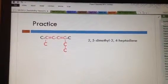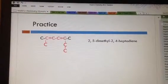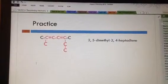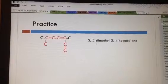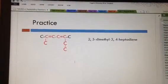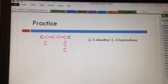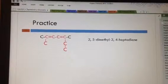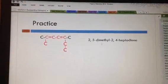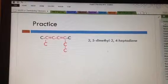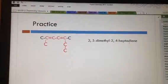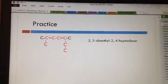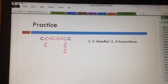So at 2 and at 5, there are single carbon charms. A single carbon charm is called methyl. Because there are two of them, it is a dimethyl. So the 2 and 5 tell me where the dimethyls are located. And the 2 and the 4 tell me where the dienes are located. And the hepta lets me know that there were seven carbons in my main chain.